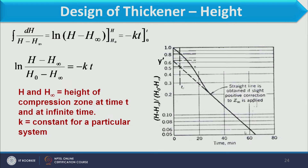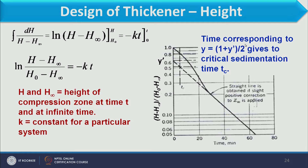On this semi-log graph, the Y-axis is logarithmic and the X-axis is linear time. To calculate Tc, we use Y equal to (1 plus Y-dash) divided by 2, which gives the critical sedimentation time. Y-dash is obtained by extending the linear portion of the compression zone line until it intersects the Y-axis. The corresponding time value at Y = (1 + Y-dash)/2 is Tc. This is the Roberts method to calculate the critical sedimentation time.